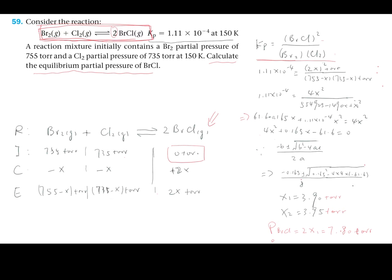Last is E, which denotes the equilibrium and is simply the summation of the change and the initial conditions. Now we obtain this as a function of x.